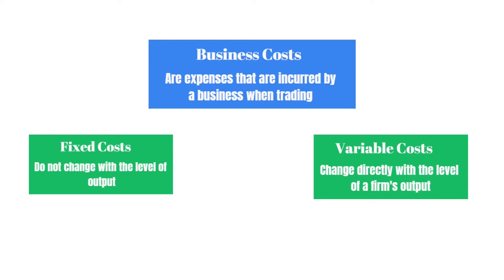Variable costs do change with output. If a business is going to produce more goods, they will need more raw materials, for example, so the variable costs would change because output has increased. If a business has more customers, then they will have to produce more of the given product, and the output would change along with any costs associated with it. If a business's output were to reduce, then so will the variable costs.